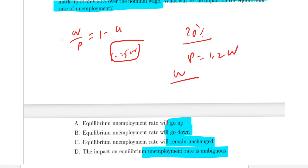Substituting 1.2W into the equation, W divided by 1.2W equals 1 minus U. Simplifying the equation, we get 0.833 equals 1 minus U, therefore U equals 0.167 or 16.67%.